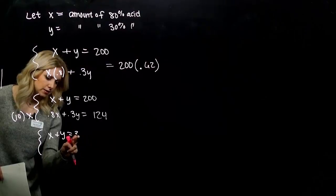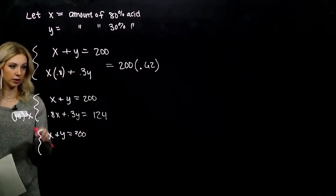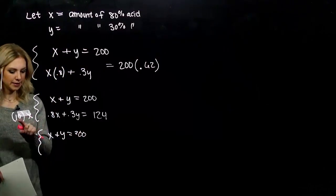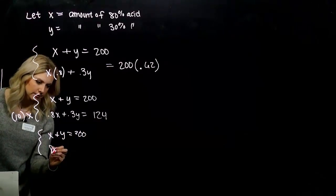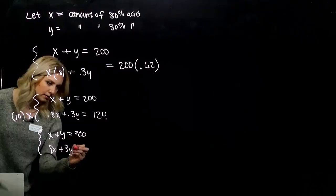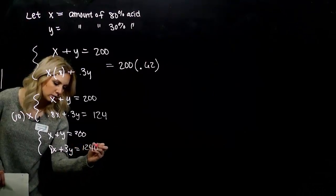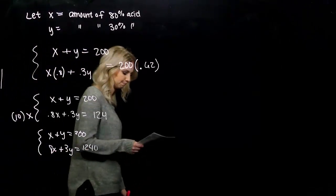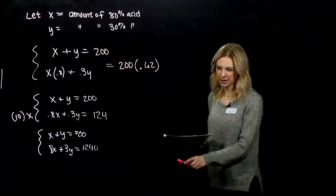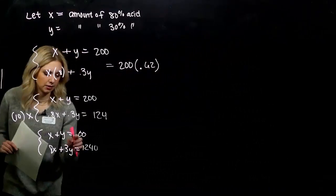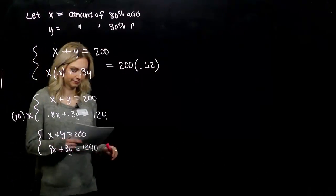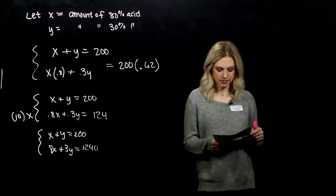The system is still equivalent. Now we're looking at 8x plus 3y equals 1,240. So now that we have whole numbers, we're less likely to make mistakes. And we need to solve.